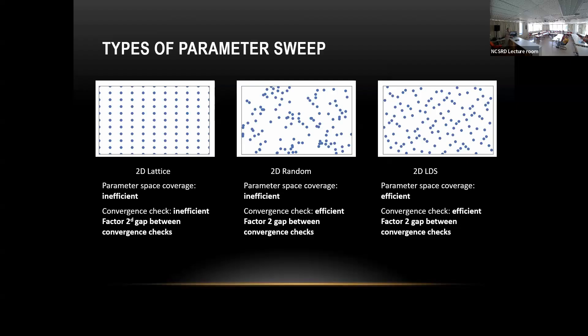You keep increasing the number of samples and see if your histogram has converged. The convergence check is inefficient for random samples, and coverage of the space is also inefficient — there are a lot of gaps. With a lattice, you take a certain number of points in each dimension. It looks efficient, but it's not — if you look in the diagonal direction, the measure of non-uniformity, called discrepancy, is high for both lattice and random samples.